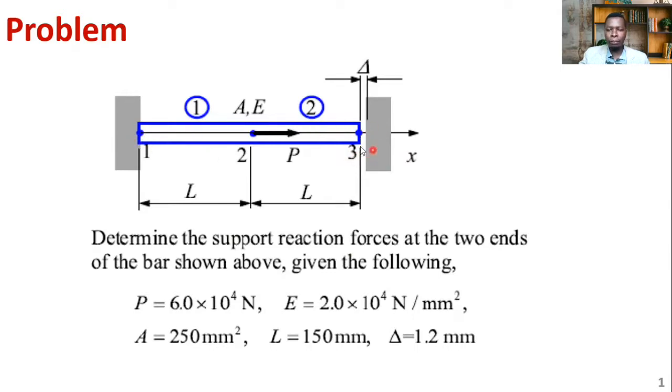We know for this end at support or node 3 to have a reaction, it has to touch the support. You're given the load applied at the midpoint P equals 6 times 10 to the power 4 newtons, the Young's modulus E and the area A, length L, and this gap is given.